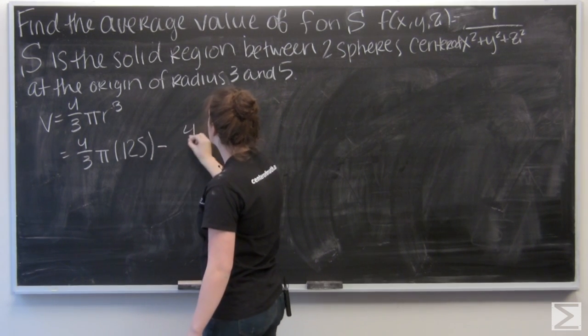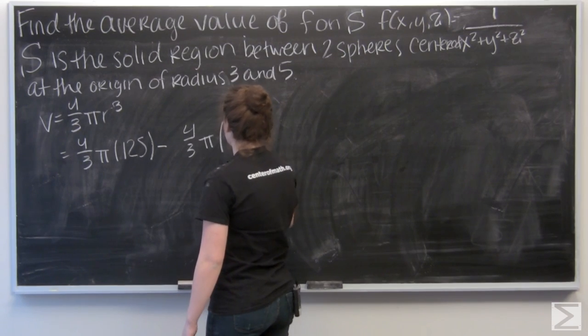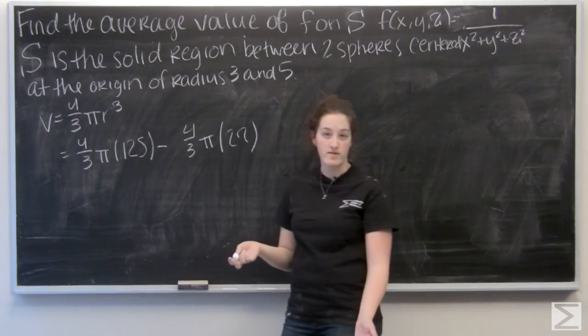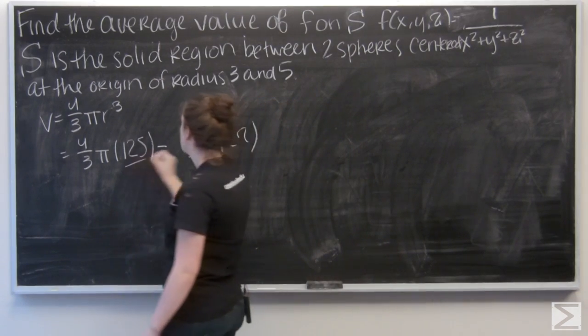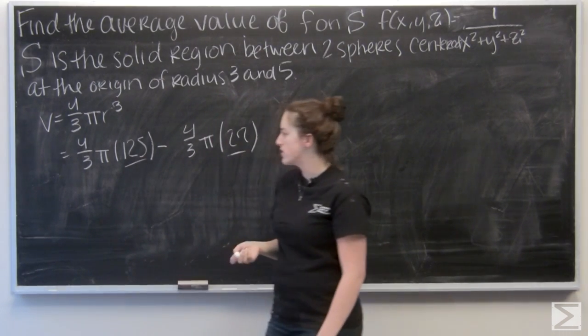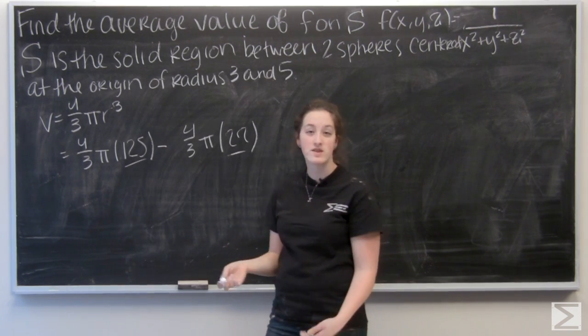And I want to subtract 4 thirds pi times 27, because 27 is 3 cubed. Let me combine these two before I multiply. 125 minus 27 is going to be 98.